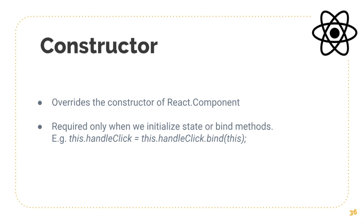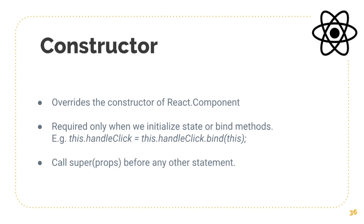If you want to use 'this.props' in your class components, you require the constructor. For function components, you don't require a constructor because props are directly accessible. You must call super(props) before any other statement — if you're defining a constructor, you need to call super with props as its parameter; otherwise, 'this.props' won't be available inside your class-based component. Also, do not call setState inside the constructor because the constructor is the place where you initialize state, not set state. Now let's take an example of a constructor method, and then we'll also look at other lifecycle methods as well.